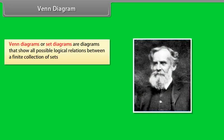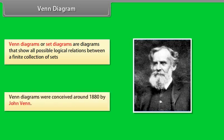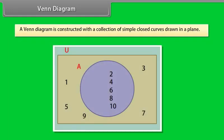Venn Diagram. Venn diagrams or set diagrams are diagrams that show all possible logical relations between a finite collection of sets. Venn diagrams were conceived around 1880 by John Venn.